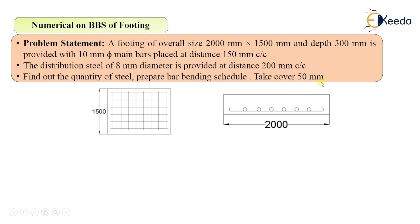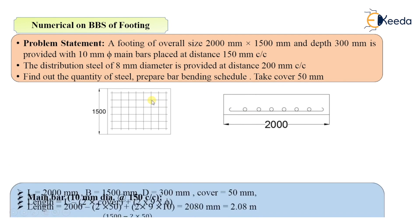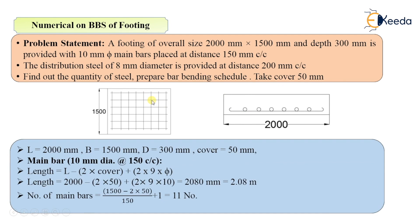First we will do the calculations then we will prepare the bar bending schedule. The given data: Length is 2000mm, width of footing is 1500mm, overall depth of the footing is 300mm, and cover of the footing is 50mm.